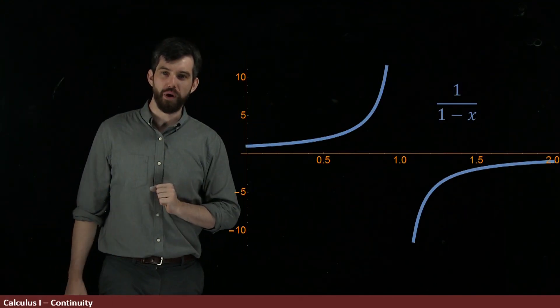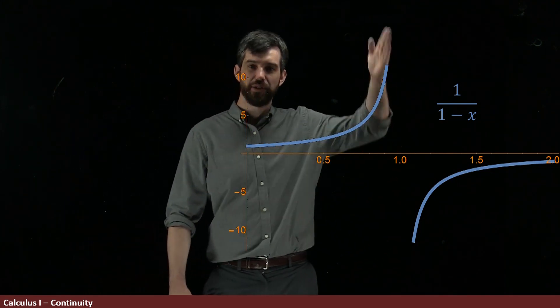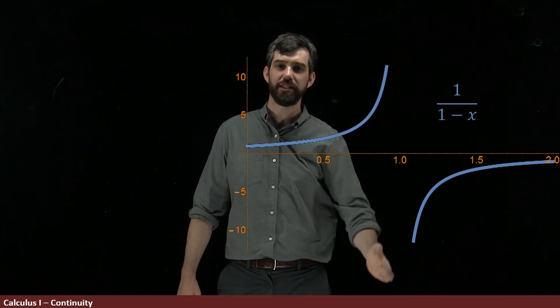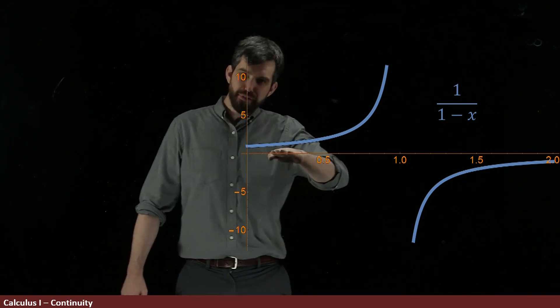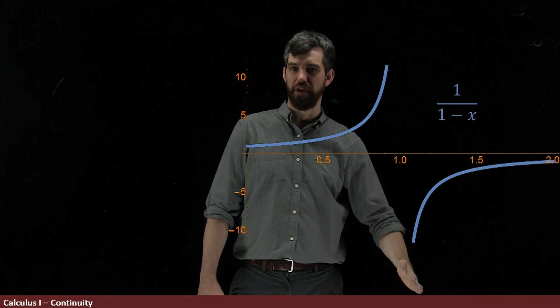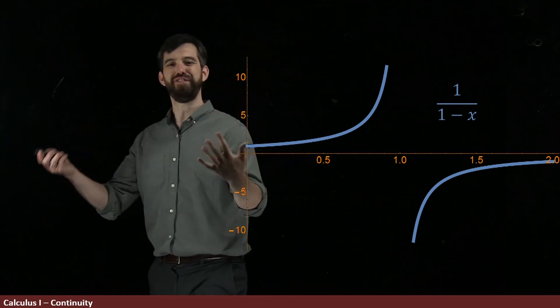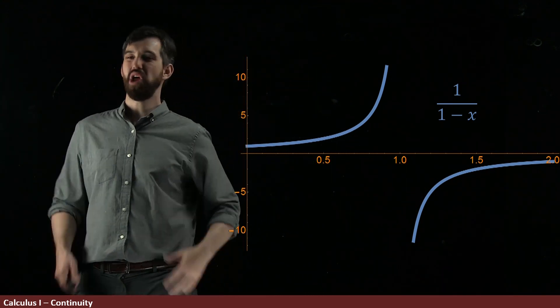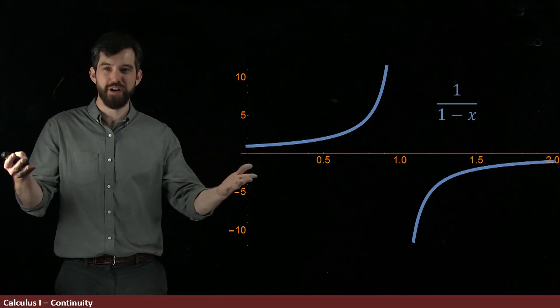We've seen this example before. This has a vertical asymptote, it's got this gigantic infinite spike here. The limit from the left is going to positive infinity, the limit from the right is going to minus infinity, and the function's not even defined at 1. So it's not at all the case that the limit and the function value are the same.